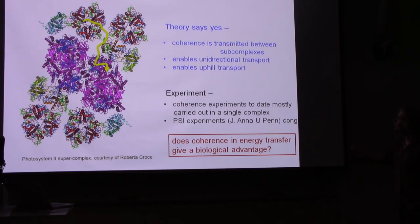But I've shown you before that PS2, which is really one of the most interesting systems for us on Earth, is a super complex, and it has many complexes. So each one of these things here, which are the antenna complexes, is actually a trimer. And each one has 14 of the chlorophyll molecules, and they're all acting in concert together.